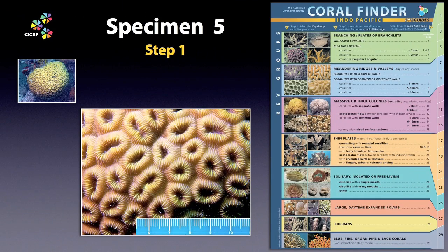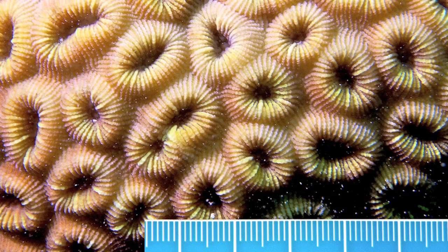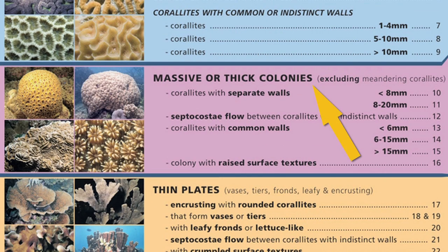Specimen 5. Here we have another sub-massive coral, this time with separate coralite walls. In specimen 4, I steered you away from the massive key group towards the meandering key group because of the subtle valley development. Looking at the coralite shapes in specimen 5, you might think we should go meandering as well — but no. So let's go massive key group, separate walls, 8 to 20 millimetres diameter, lookalike page 11.